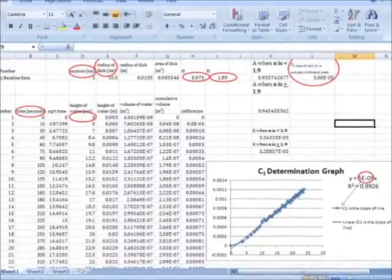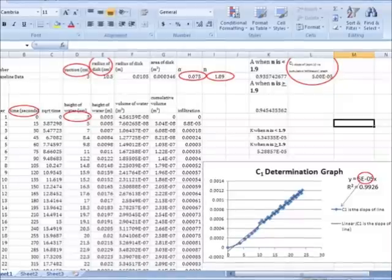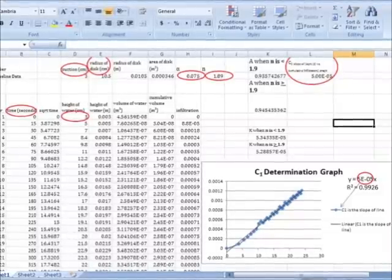It just necessitates the input of the disk and rings radius, the height of the water measurements at each time step, and a slope calculation.